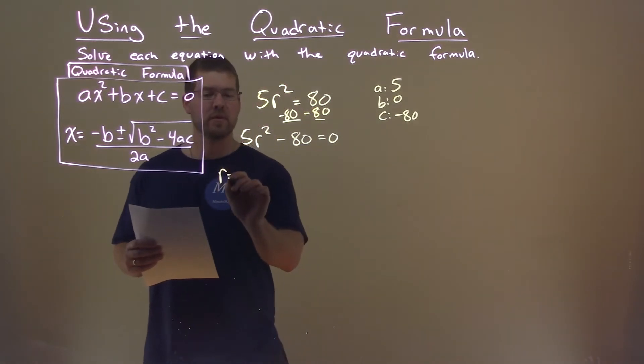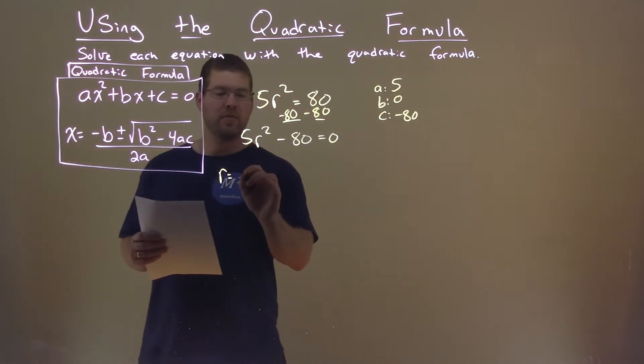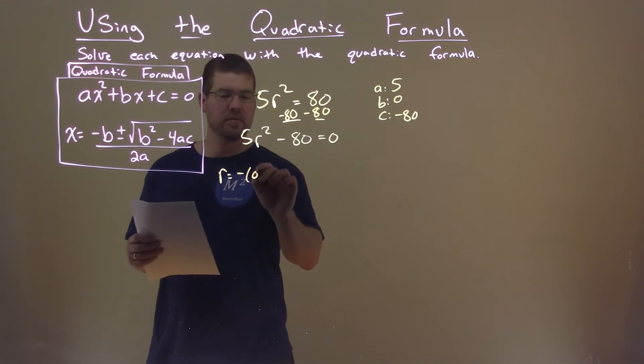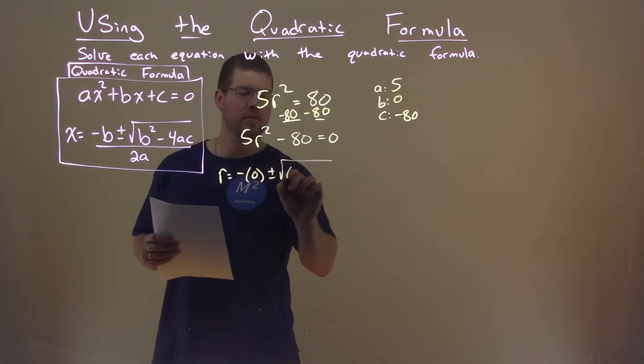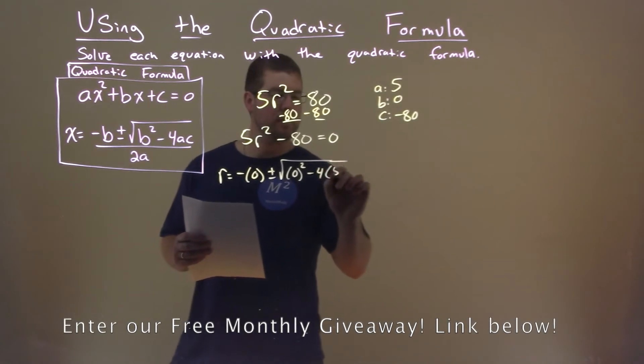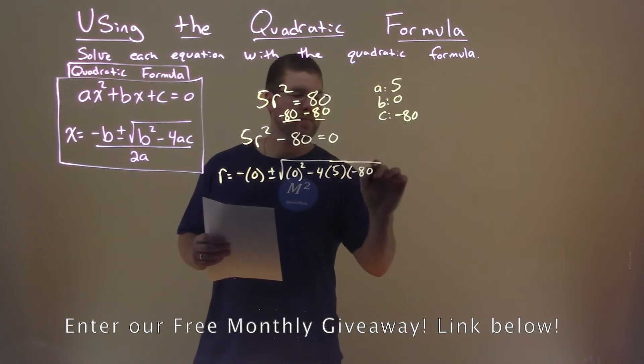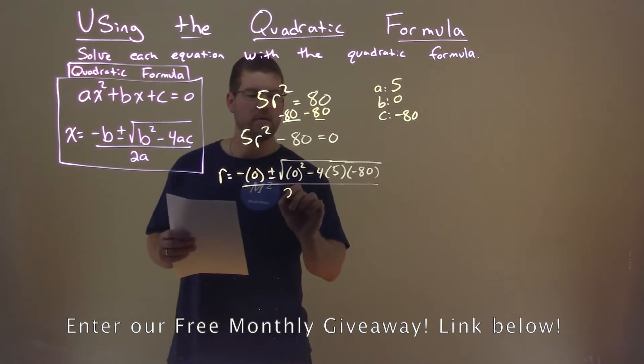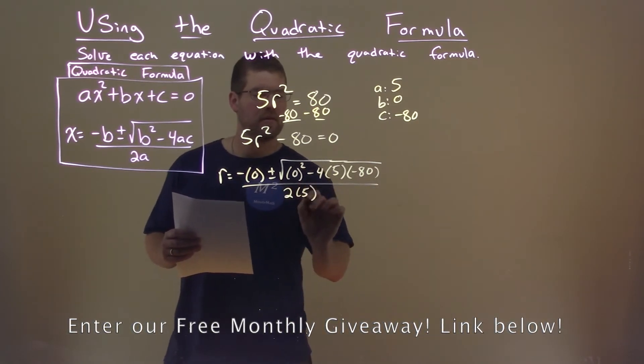So now we use the quadratic formula to solve. We have negative b, which is 0, plus or minus the square root of b value squared, minus 4 times a, which is 5, times c, which is negative 80, all over 2 times a, which is 5.